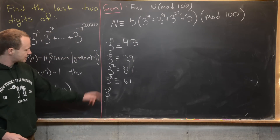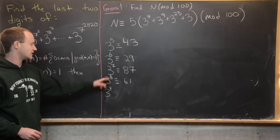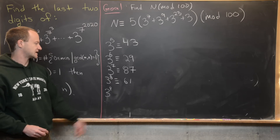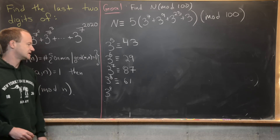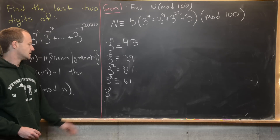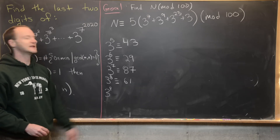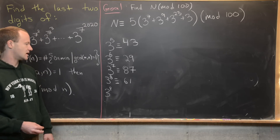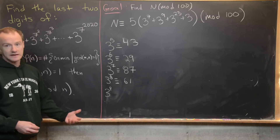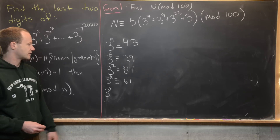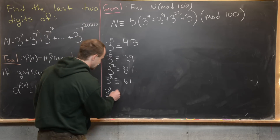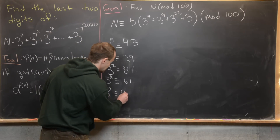For 3 to the 9th: that's 3 times 3 to the 8th, so 3 times 61. Three times 60 is 180, reduced mod 100 to 80, and 3 times 1 is 3, giving us 83. So 3 to the 9 is congruent to 83 mod 100.